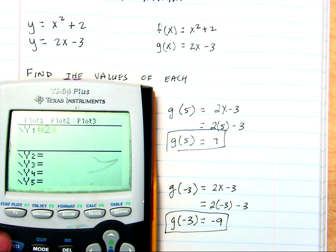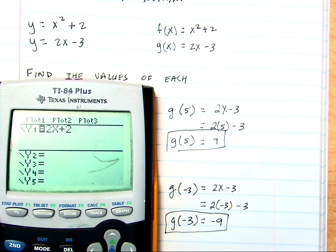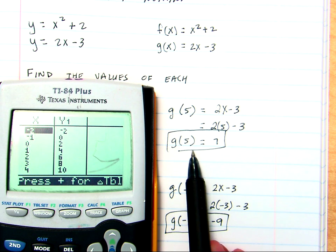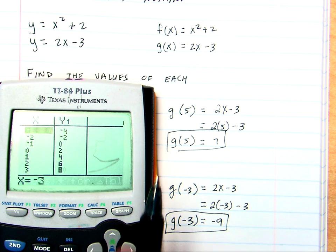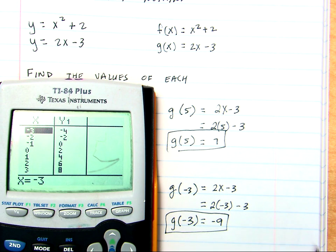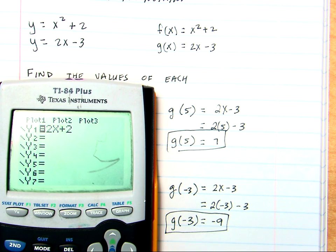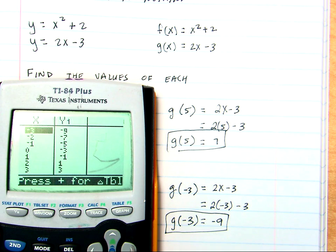So, now we're going to do the same thing for g of x. So, clear, 2x minus 3. Second graph. Now, I'm going to look at negative 3 first because we're closer to it. Negative 3. Uh oh. What did I do wrong? I typed in the wrong equation. That would help.